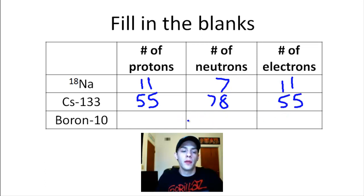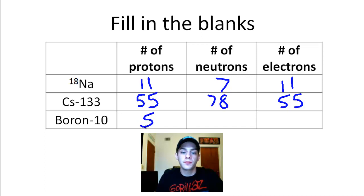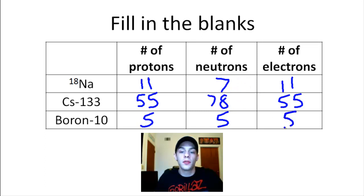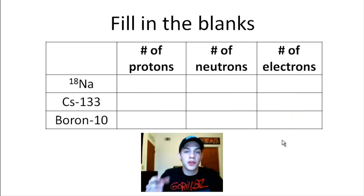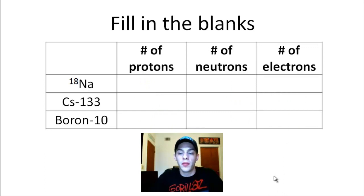Let's do one more: boron-10. The number of protons — the periodic table tells us the atomic number is 5. Number of neutrons: take the mass number 10, subtract 5, and you get 5 neutrons. The number of electrons is 5. So it's 5, 5, 5 for boron-10. This notation is pretty straightforward and shouldn't be a big problem.